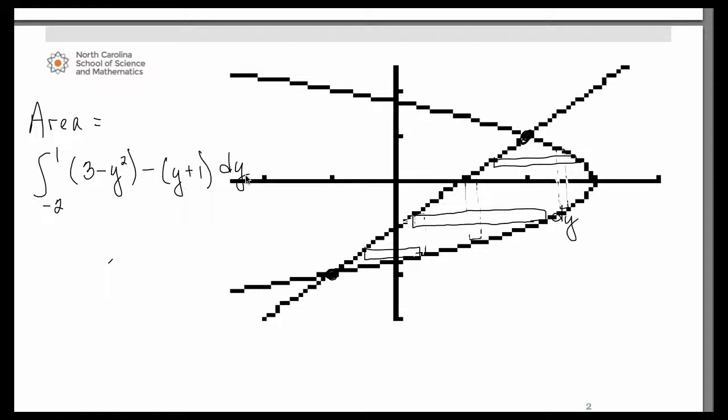So you can do that antiderivative by hand if you wish, or you can just go ahead and evaluate it in your graphing calculator. I'm going to simplify it a little bit. So I have to distribute that negative, so I'm going to go ahead and put these in one order. Negative y squared minus y, that would be 3 minus 1, so that becomes plus 2.